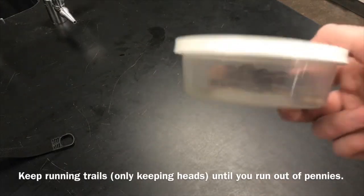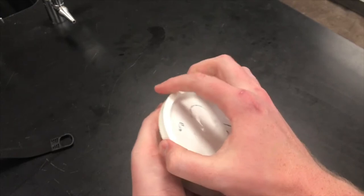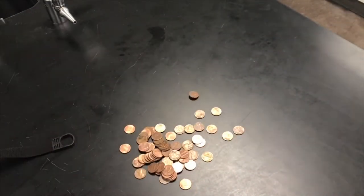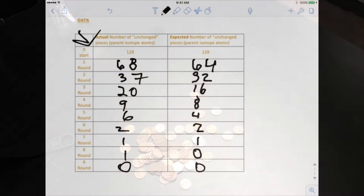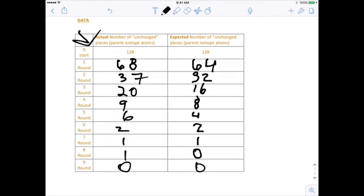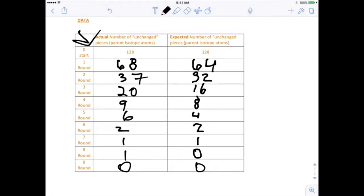I'm going to separate that into heads and tails and continue this procedure until I run out of heads. This is how my data turned out after running nine rounds of trials. Your data is obviously going to look just a little bit different.